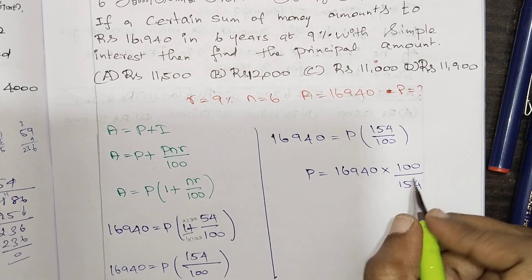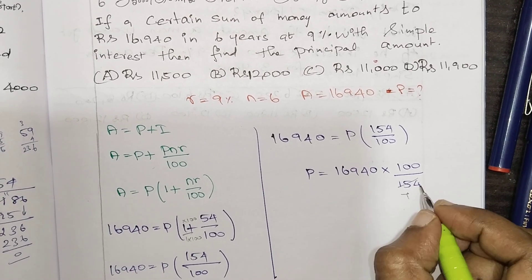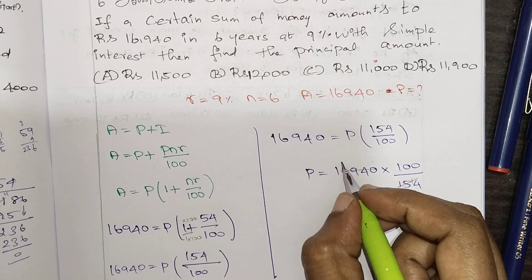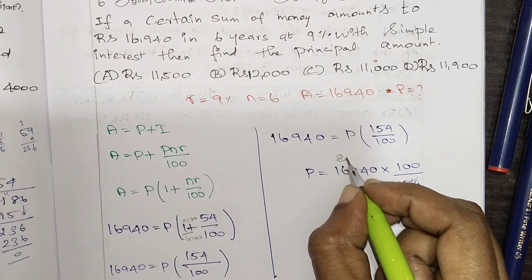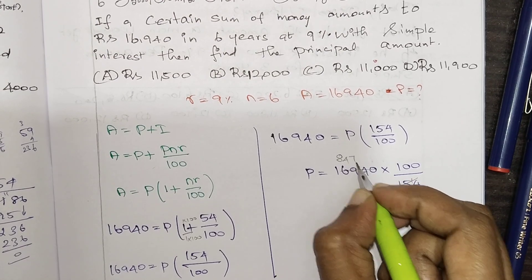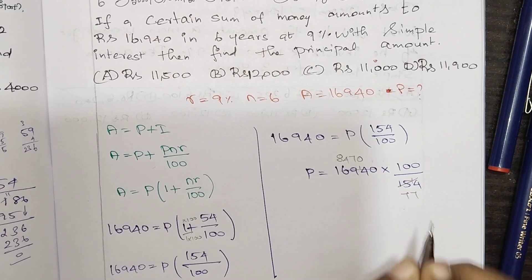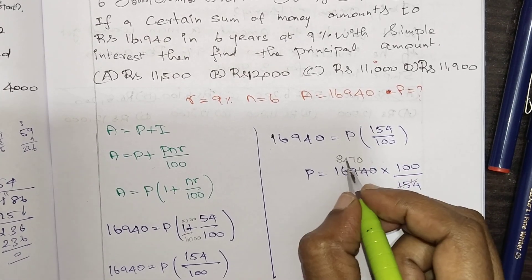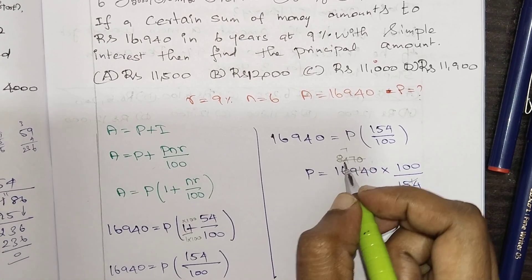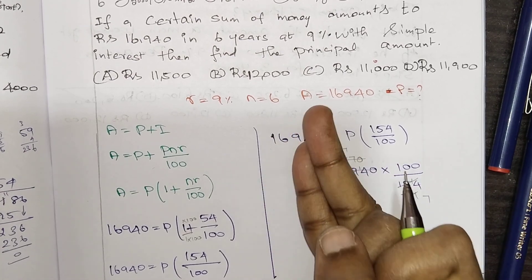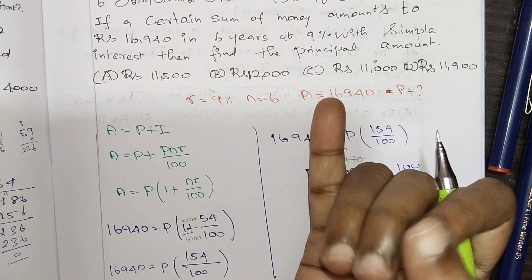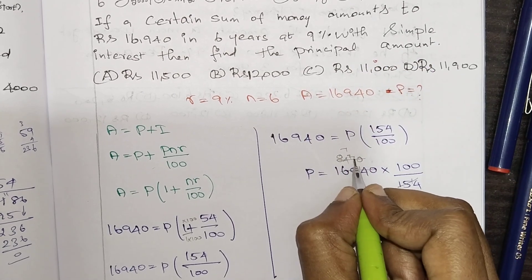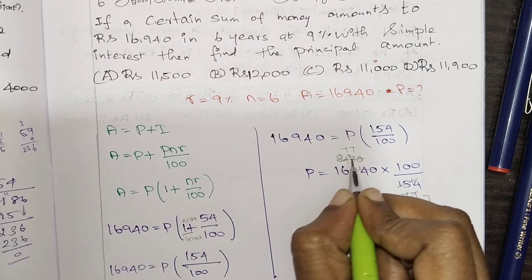Carrying out the division: 16,940 into 100 divided by 154. Working through the long division gives us the result.